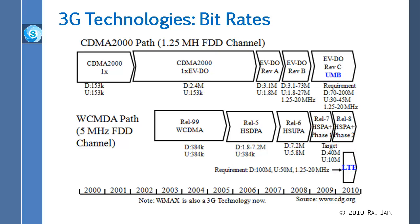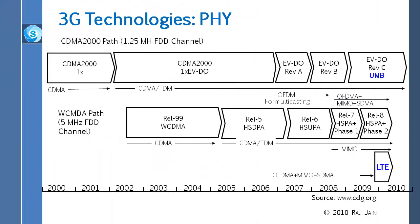To get from 3G to LTE there are many steps: HSDPA, HSUPA, HSPA+ phase 1, phase 2, and then LTE. At the physical layer it remains CDMA all the way until OFDM appears. OFDM is used for multicasting in some earlier steps but OFDM fully starts with LTE, while MIMO starts even earlier with CDMA. However, CDMA cannot do MIMO as well as OFDM can, which is one reason CDMA could not achieve higher speeds.